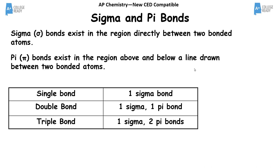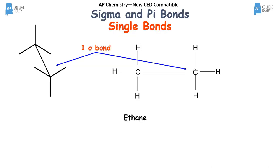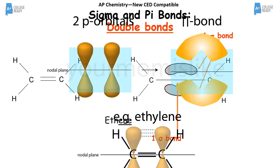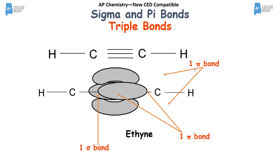Leftover p orbitals create pi bonds — regions of electron density above and below the initial sigma bond. In ethane, the carbon-carbon bond and the carbon-hydrogen bonds are all sigma bonds. In ethene, the two carbons are linked by a double bond: the first bond formed by orbital overlap is a sigma bond, and the second is a pi bond, represented visually as two lobes above and below — like two hot dogs.